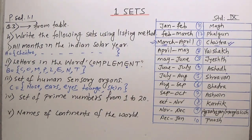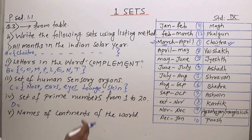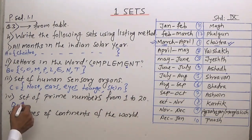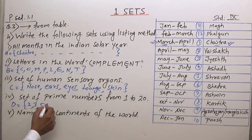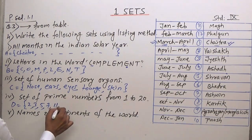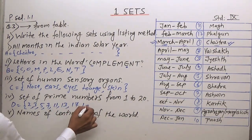Fourth question: set of all prime numbers from 1 to 20. We list: 2, 3, 5, 7, 11, 13, 17, 19.